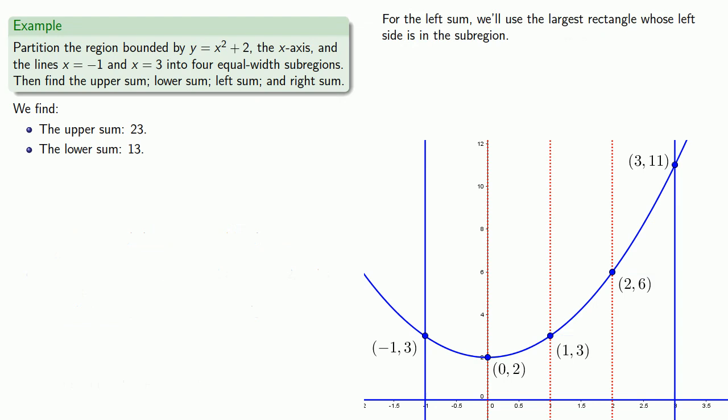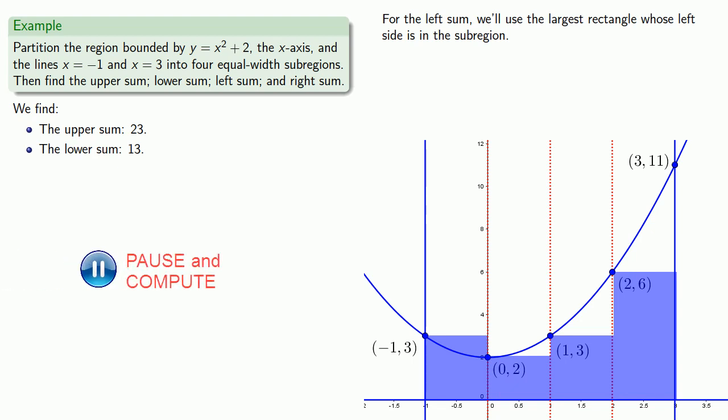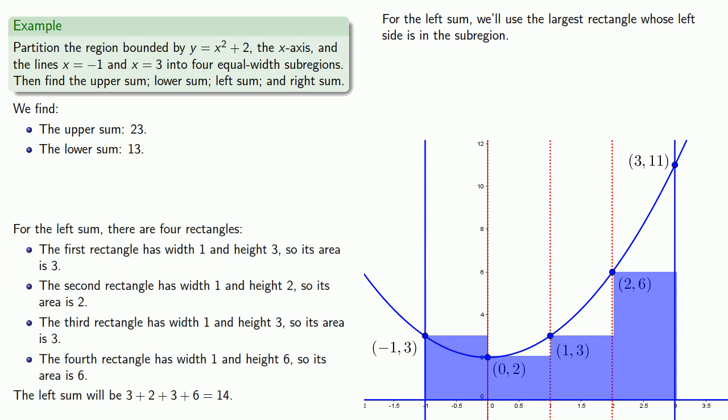For the left sum, we'll use the largest rectangle whose left side is in the sub-region. So one way to do this is to go to the left side of the sub-region and then expand from the left side to get our rectangle. And now we have a bunch of rectangles whose areas we can calculate and add together to form the left sum.